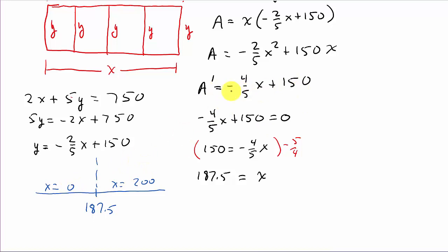Alright. So, if we plug 0 into here, that gives me a positive. And if I plug 200 into the first derivative, that's going to actually give me a negative. So, that's decreasing. And there's your maximum.